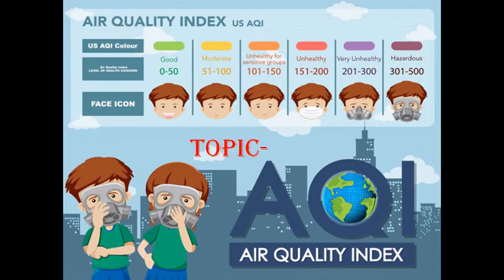Air Quality Index — what do we mean by it? It is defined as the index to measure the air quality with the help of certain numbers. We have various color codes and health descriptions for understanding by the general public, so that they can understand the severity of air pollution in their cities and the various negative health effects.